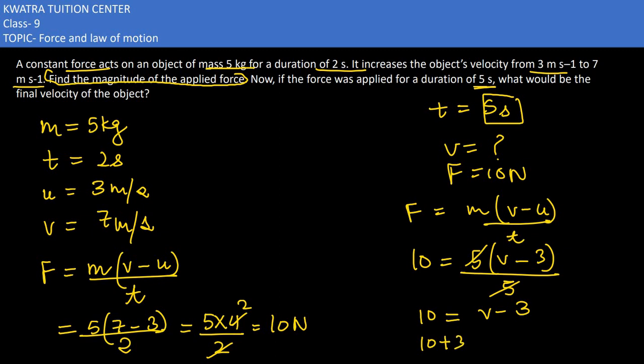Take minus 3 to the other side, so it becomes 10 plus 3 equals v, which is 13. Sorry, not newtons—it should be meters per second. v would be meters per second.